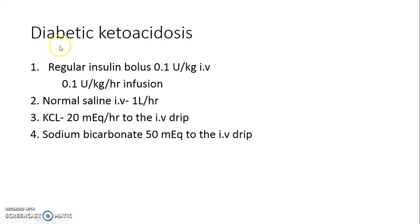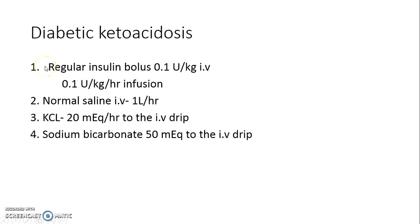The treatment of diabetic ketoacidosis: since there is more glucose due to lesser insulin, we need to give insulin from outside. Regular insulin is required in a bolus dose of 0.1 unit per kg, and a maintenance infusion can be given at 0.1 unit per kg per hour.